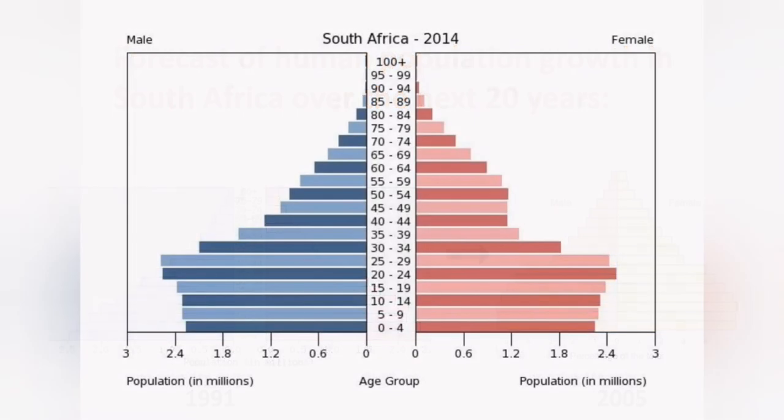Looking at the most current 2014 census statistics, South Africa is now showing an almost declining population. The shape is moving from rectangular toward a diamond shape, placing us far from the less developed country we were in 1991.